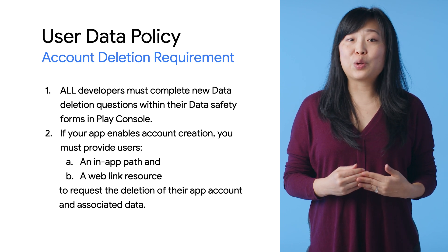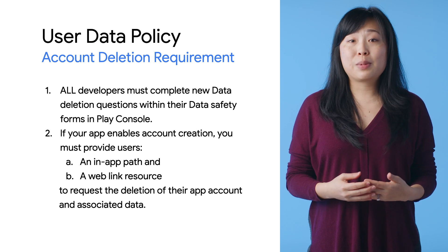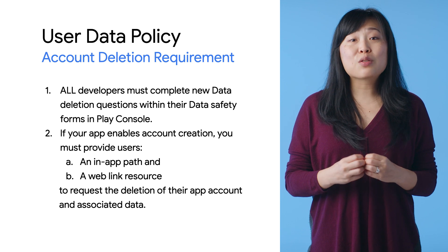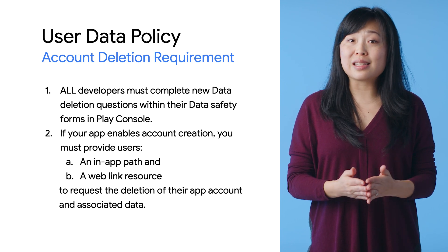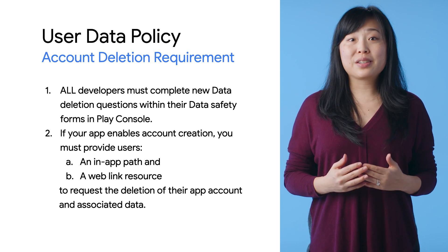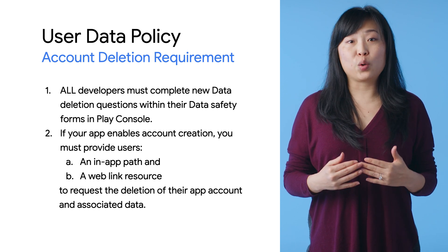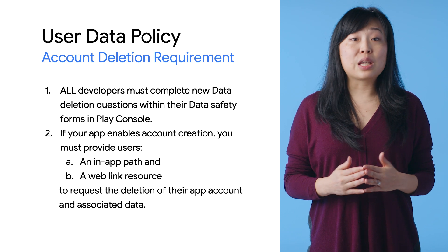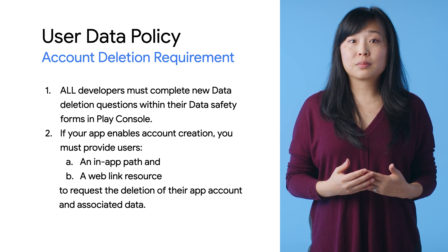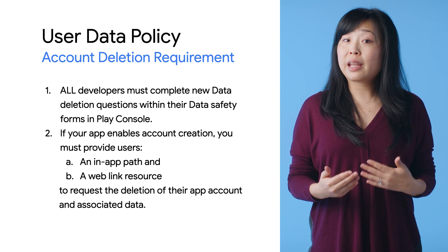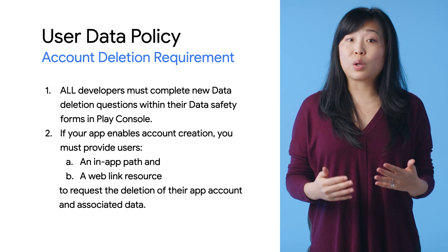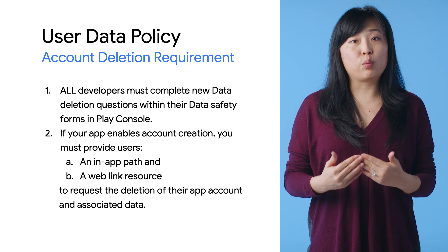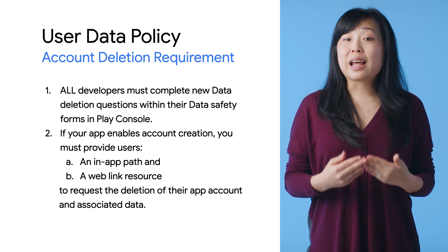Last year, we launched the data safety section in Google Play, which gave you a way to build consumer trust by explaining how your app might collect, share, and protect users' personal data. This year we're enhancing this feature with new data controls, which makes it easier for users to take control of their personal data and a way for you to showcase how you treat their data responsibly. All developers must complete new data control questions in their app's data safety form. You have the opportunity to show users the option to delete other data too — we recommend filling out your form now so you can receive feedback before the deadline. Second, if your app gives users a way to create an account from within your app, then it must give users two ways to request for their account and associated data to be deleted. You must give users an in-app path and a web link resource where they can ask for their account to be deleted. You'll need to add this link to your data safety form. We're asking for a web link because some users may have uninstalled your app, so they'll need a different way to exercise this control.